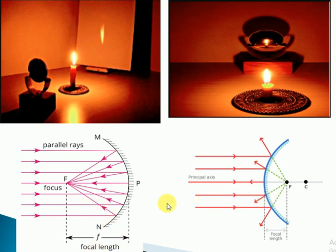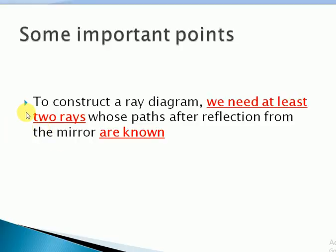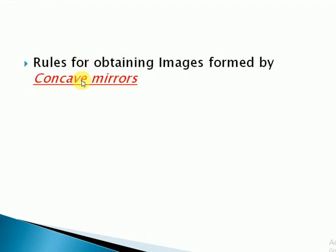The formation of an image by a mirror is usually shown by a ray diagram. To construct a ray diagram, we need at least two rays whose path after reflection from the mirror is known to us. Before discussing the ray diagram, we will describe the rules which a ray of light follows for forming an image — rules for obtaining images formed by concave mirrors.